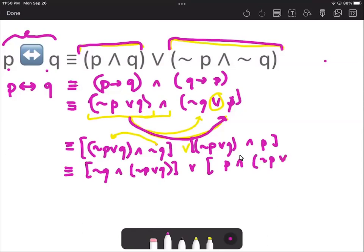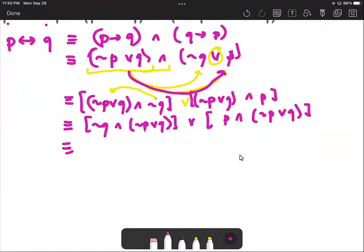Now what we can do is perform distributive law again on this. We have the not q, and we will distribute it to not p or q, and the p will be distributed to not p and q.